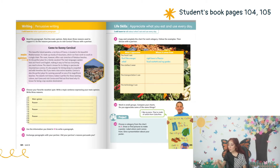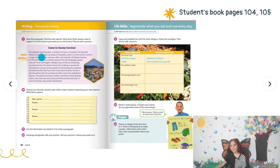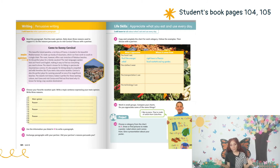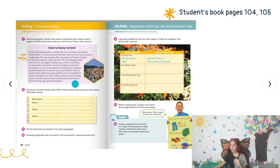So let's go to students book pages 104 and 105 to clear up any doubts. Activity 17 says: read the paragraph, find the main opinion, note down three main reasons used to support it, then discuss whether the reasons persuade you to visit Corsica with a partner. I'm going to read it, but you need to follow along to get the idea.